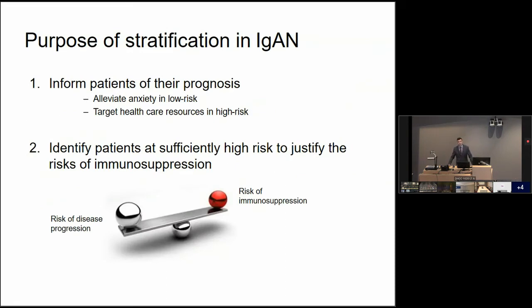Why do we care about risk stratification in IgA nephropathy? Most obviously, to inform patients of their anticipated prognosis. If you can identify low-risk patients, you might alleviate their anxiety around the diagnosis. If you can identify high-risk patients, you can target healthcare resources toward them. A second objective is identifying patients at sufficiently high risk of progression to justify immunosuppression. With recent publications of the STOP IgA and TESTING trials, we have a very good understanding of the substantial risks of corticosteroids, and we need to balance that against the absolute risk of disease progression.